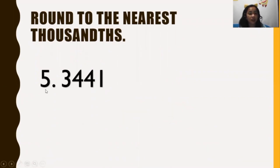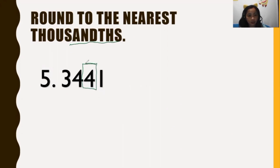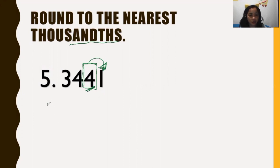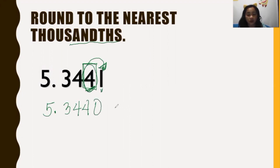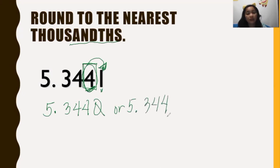Next example: round to the nearest thousandths. We have five and three thousand four hundred forty-one ten-thousandths (5.3441). The thousandths digit is four, and the number to the right is one — so it is round down. Four is retained; one becomes zero and is dropped. The answer is five and three hundred forty-four thousandths (5.344).